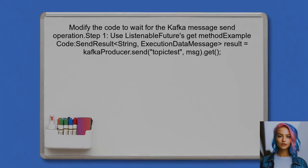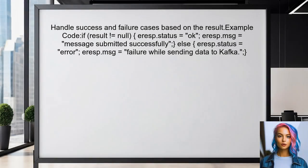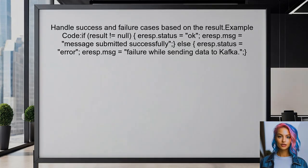To ensure the user receives the submit status after the Kafka message is sent, we need to modify the code to wait for the result of the send operation. First, the user should use the ListenableFuture's GET method to block until the operation completes. Next, the user should handle the success and failure cases based on the result obtained.